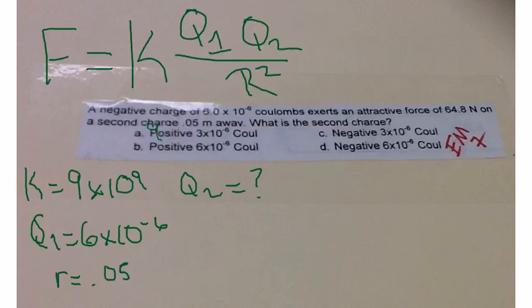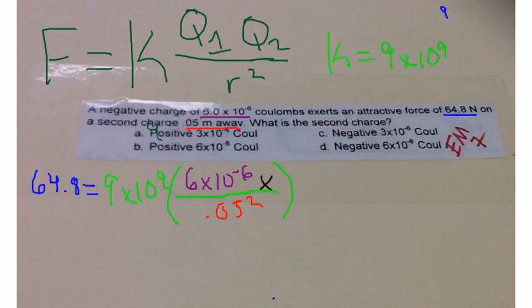Now we are going to set up the equation. So we will have 64.8 N equals 9 times 10 to the 9, times 6 times 10 to the negative 6, X over 0.05 squared.